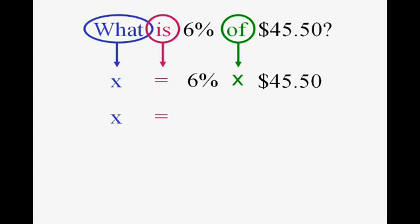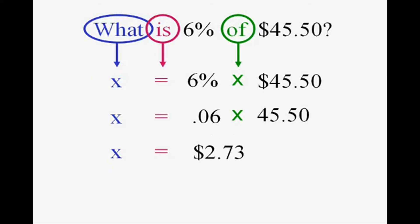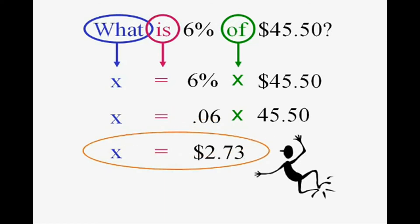Now, how do we solve this equation? X is already by itself, so all we have to do is multiply. It's going to be critical to change that six percent to a decimal so that we can multiply — we know that becomes six one-hundredths. Multiply that times forty-five fifty and you've got your answer. Six percent of forty-five fifty — does that seem reasonable? It does. So all you need are those three categories of information.